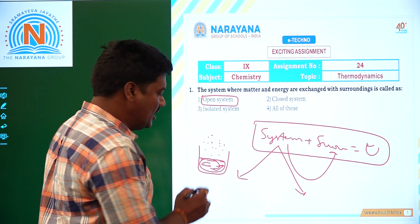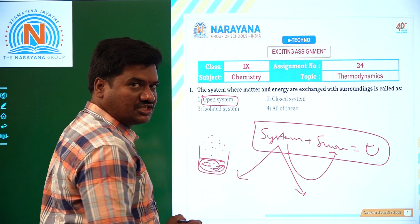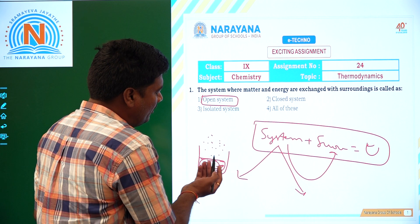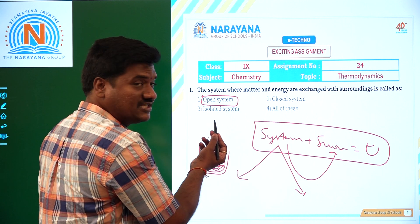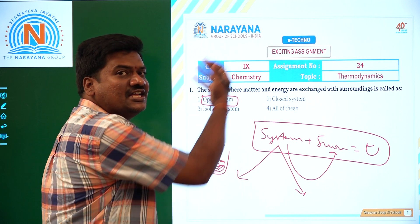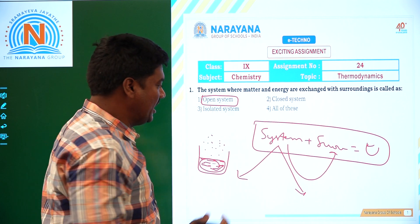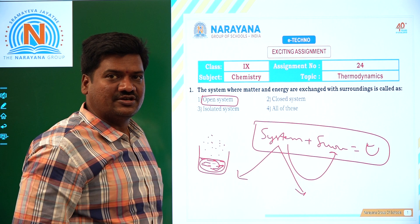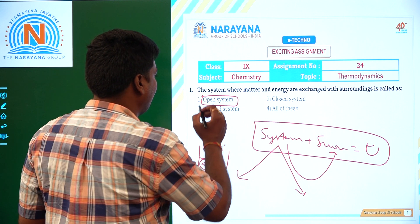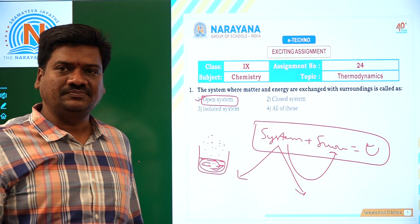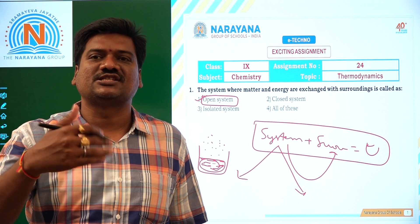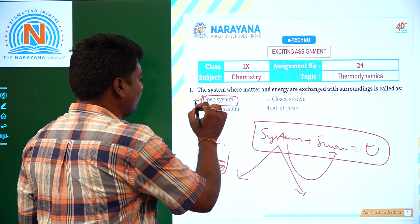Some water vapor will be decreasing from the system. Hot water is the system. From hot water, a little amount of water evaporation takes place. It becomes gaseous state and comes to the surroundings — from system to surroundings it is changing. Along with matter, some energy also comes outside. In the open system, both matter and energy exchange takes place. That is the definition for open system.